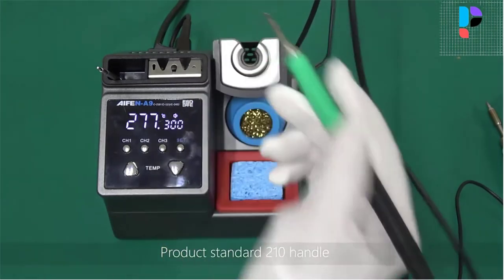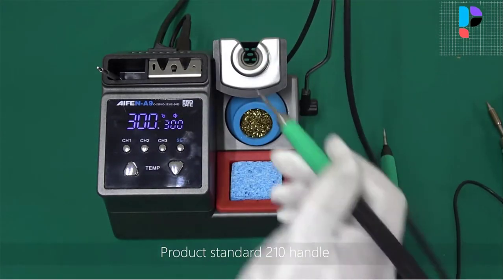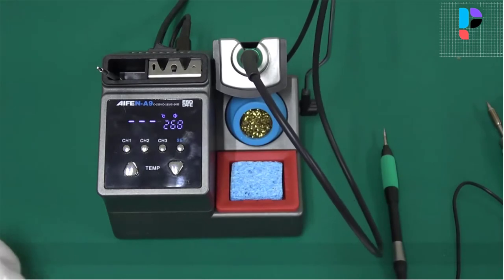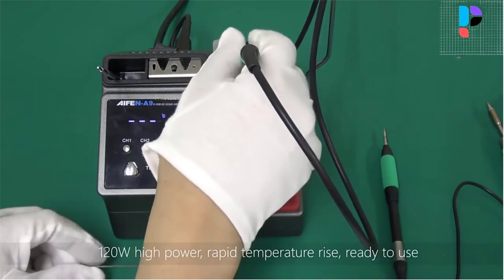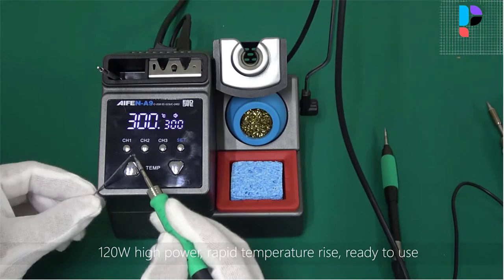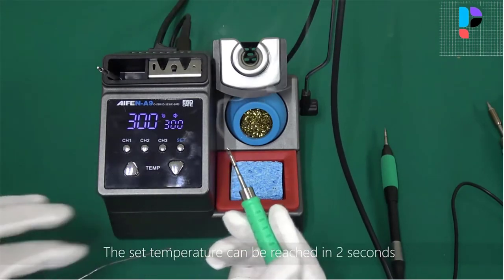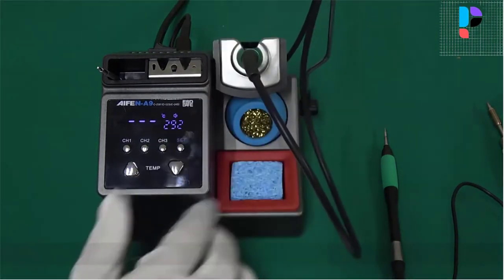The A9 soldering station is compatible with C-115, C-210, and C-245 three soldering iron head handles. The temperature control of the program chip is different from the traditional AC voltage temperature control, and the temperature rises quickly and accurately.